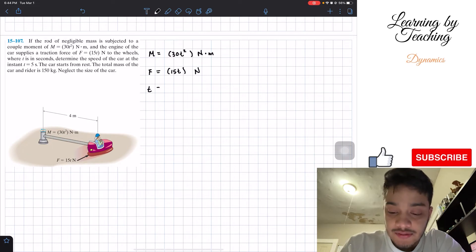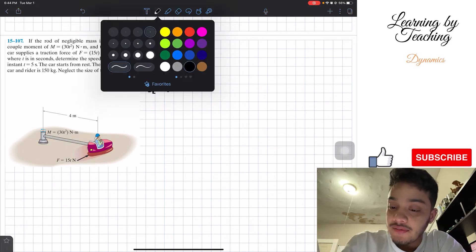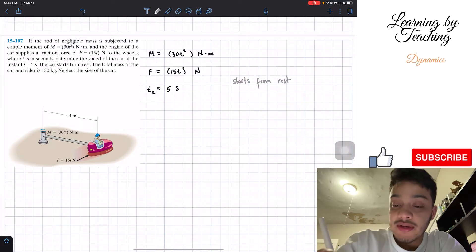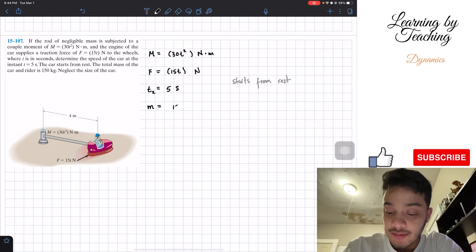We're given that the time that we're interested in evaluating, I'm going to call it t₂, is equal to 5 seconds. We're given that the car starts from rest, so I'm going to write that down over here, just for informational purposes. And the last thing is that the mass of this car and the rider combined is equal to 150 kilograms.